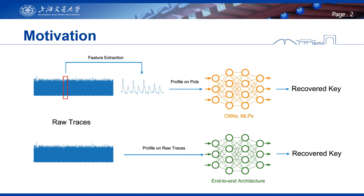In our opinion, these previous works carry an implicit assumption that the number of time samples in raw traces can be reduced before profiling easily. However, if we consider a practical black-box analysis on a masked implementation, locating the leakages is arguably the most challenging part of the whole analysis. The assumption may be too strong or even invalid in a practical analysis targeting a masked implementation.